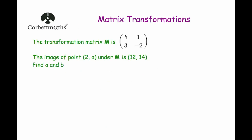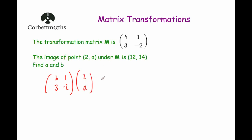Our next question: the transformation matrix M is b, 1, 3, minus 2. The image of the point (2, a) under M is (12, 14). Find a and b. We multiply the matrix by the point and set it equal to (12, 14). Multiplying the first row by the column: b times 2 is 2b, plus 1 times a is a, and that equals 12. Multiplying the second row: 3 times 2 is 6, minus 2 times a is minus 2a, and that equals 14.